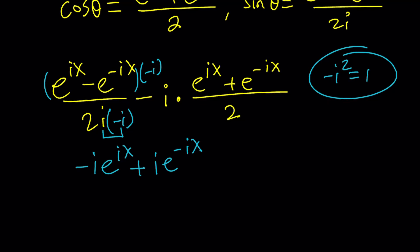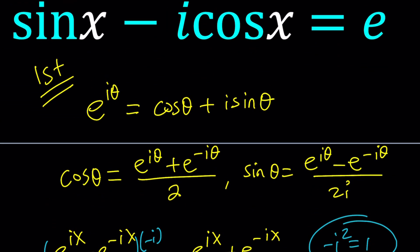In the numerator, I'm going to be getting negative i e to the i x plus i e to the negative i x, divided by 2, because i times negative i is negative i squared. And since i squared is negative 1, negative i squared is going to be positive 1. By the way, this is a mistake. It's supposed to be 1. I just accidentally wrote e.